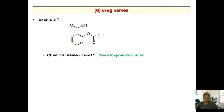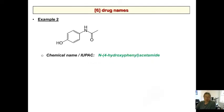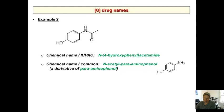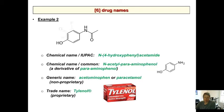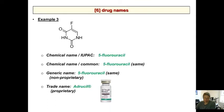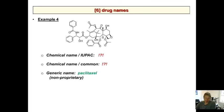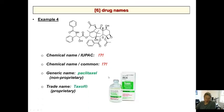We did the drug name stuff last time, so I'll skip over this. Aspirin, Bufferin — we talked about that. We did Tylenol, or 4-hydroxyphenyl acetamide, also called N-acetyl-para-aminophenol, but most commonly known as acetaminophen or Tylenol. We also did 5-fluorouracil, which is a clinical anti-cancer drug. We talked about Taxol a little bit — it's a beta-tubulin polymerization inhibitor used as a clinical anti-cancer drug. It's commonly called paclitaxel, that's the generic name, and the trade name is Taxol.